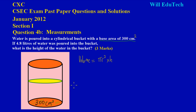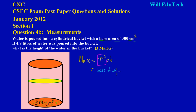If you notice in the formula, they gave us the base area. π r squared is actually the area of the circular base, so instead of saying π r squared, in this question they simply use the base area. So volume is equal to the base area times the height. They gave us the value for the base area, so I just wanted you to make that connection.